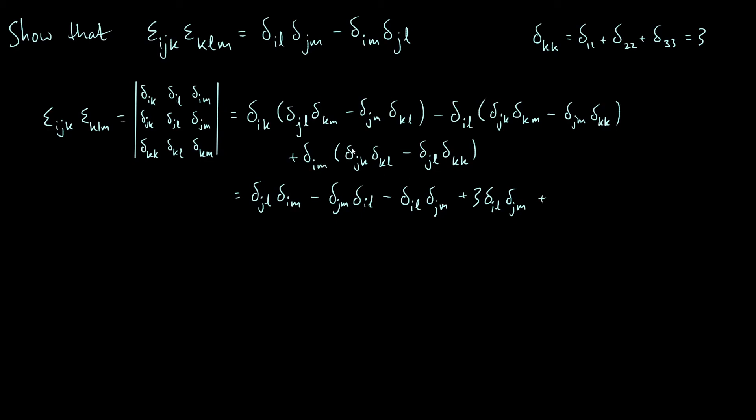Two more terms to expand. Next one, delta_im delta_jk delta_kl. j has to be k, but k has to be l, therefore j has to be l. So delta_im delta_jl. And then the last term, we have a delta_kk again. So we get the same 3 and then delta_im delta_jl.